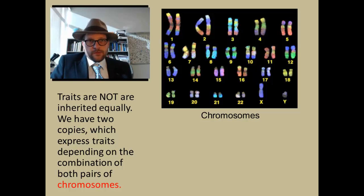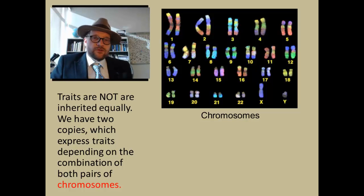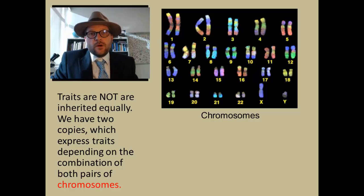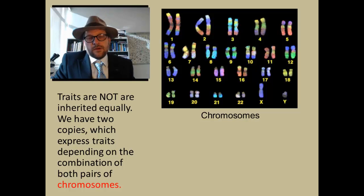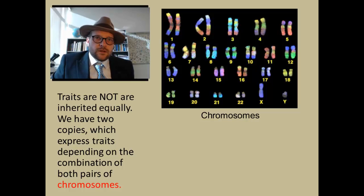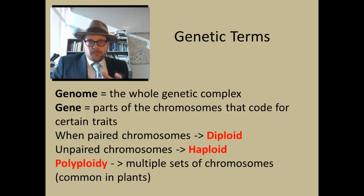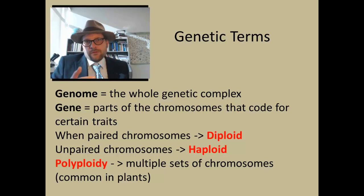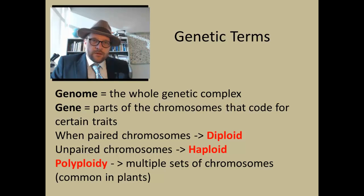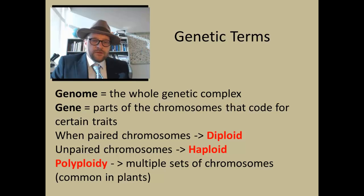The discovery Mendel made was that sexually reproducing organisms have paired chromosomes. These chromosomes split, with one side originating from the mother and the other from the father. Every cell has a copy of the chromosomes in the nucleus, and chromosomes are made up of DNA molecules. A genome is the whole genetic complex — all the chromosomes together. A gene is the part of the chromosome that codes for certain traits. When chromosomes are paired we call that diploid, and when unpaired we call that haploid. A polyploid, or polyploidy, is where you have multiple sets of chromosomes — this rarely happens in animals but is very common in plants.